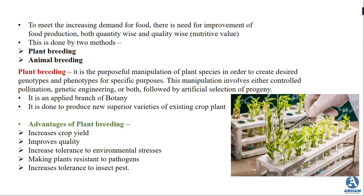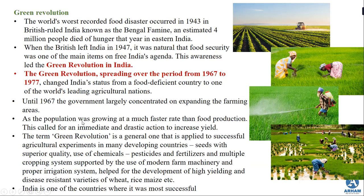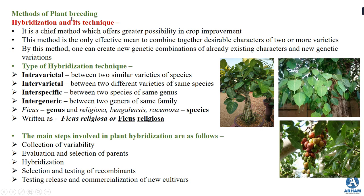This demand can be met by using two methods: plant breeding or animal breeding. So far in this chapter, we have studied about the plant breeding method. We have studied what plant breeding is, its basic ideas, and its advantages. We also studied about the Green Revolution that took place in India and the methods of plant breeding, starting with hybridization and its techniques. We have seen four types of hybridization techniques.